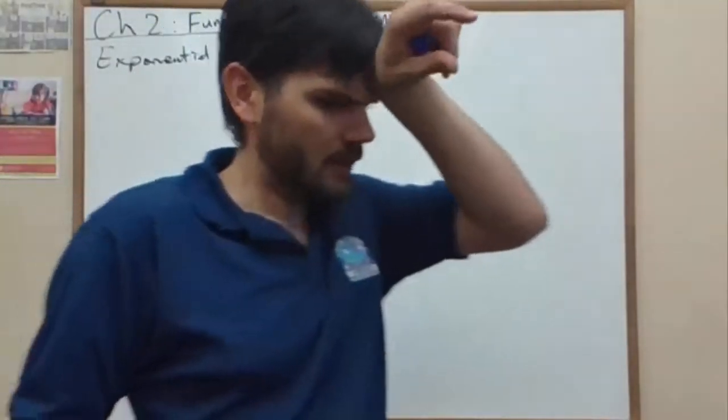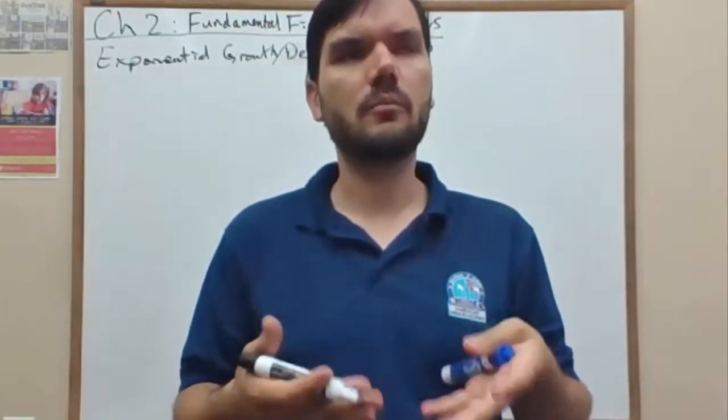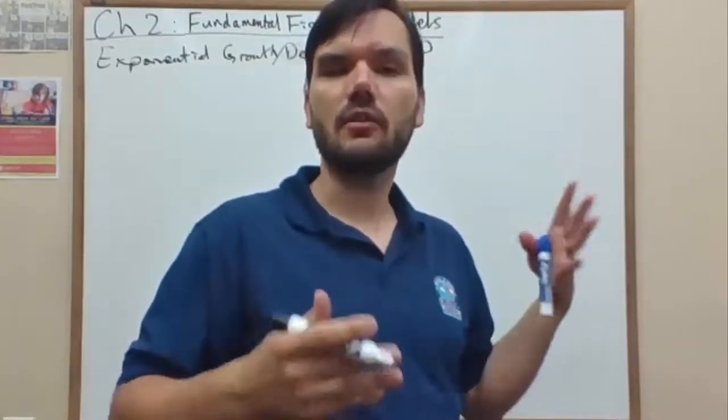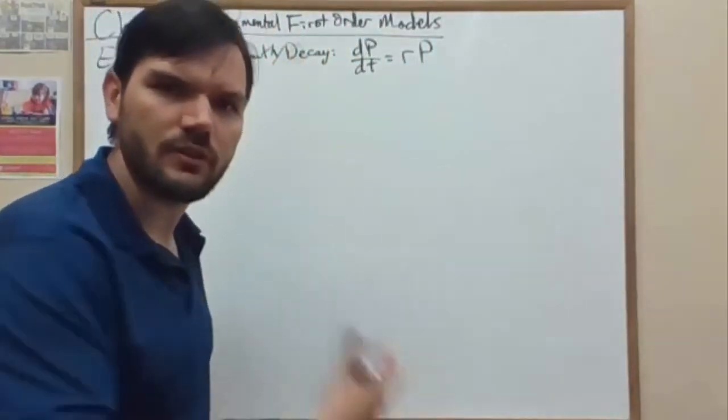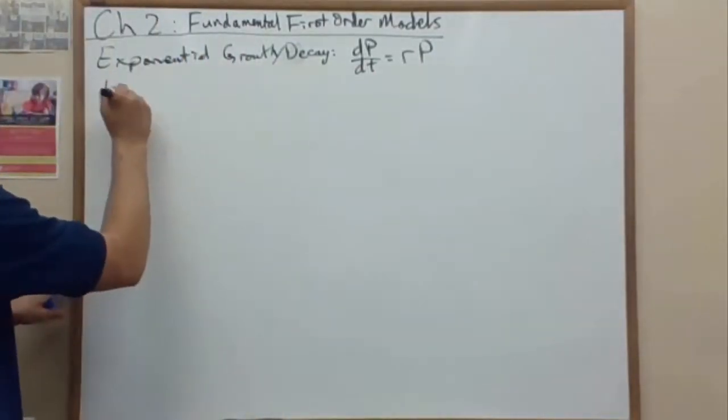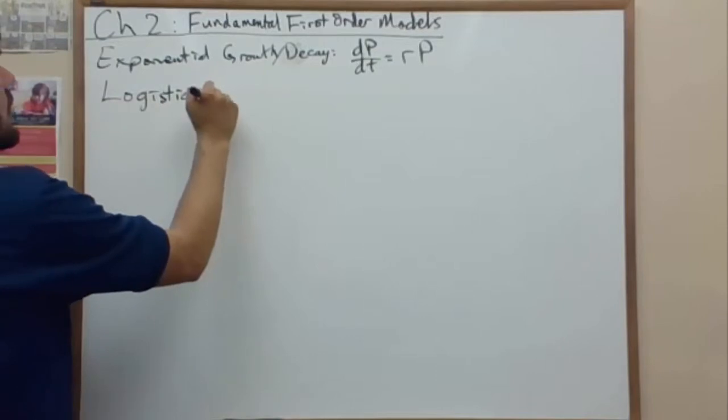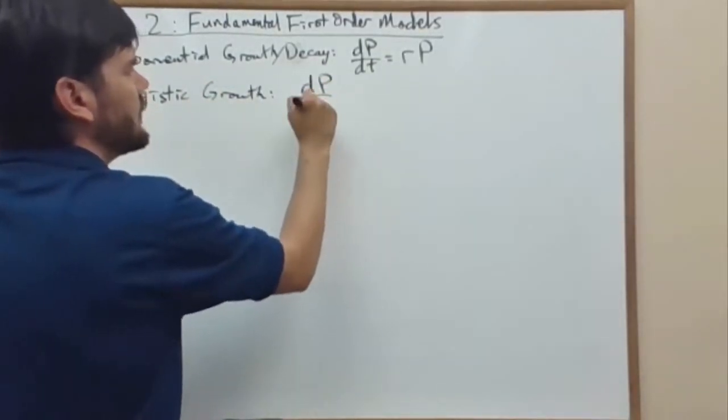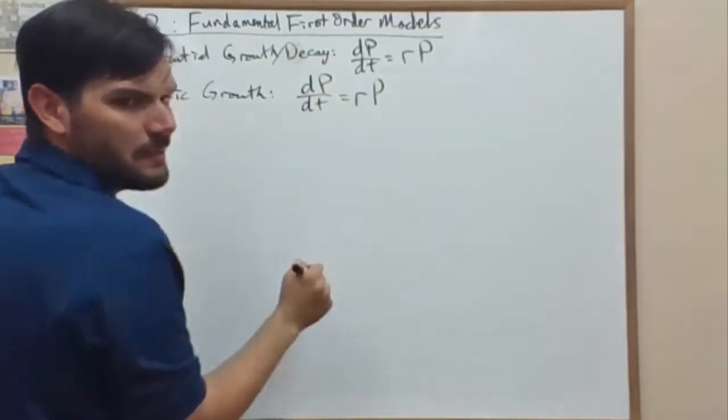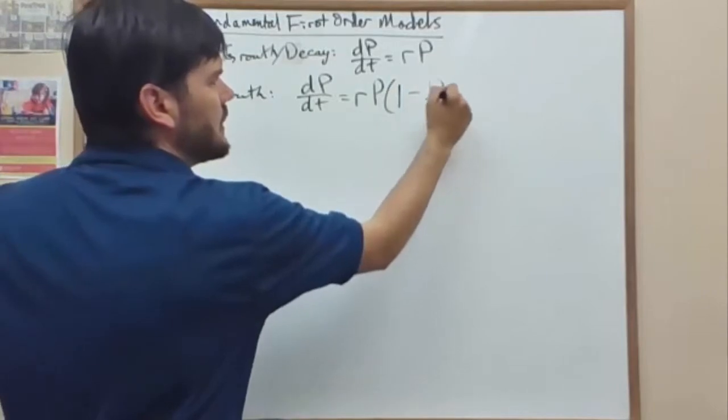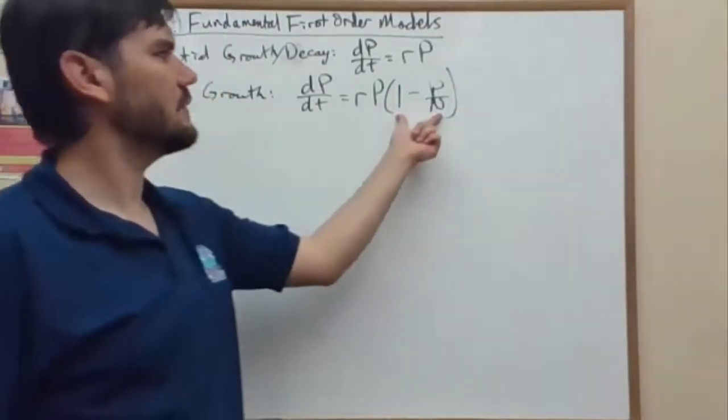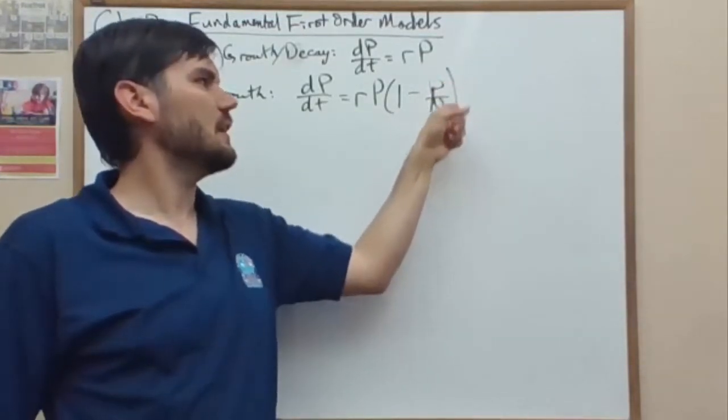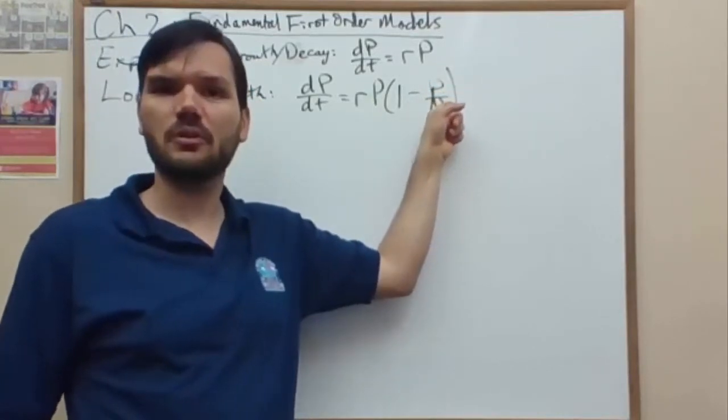So the next step on improving the exponential models to be more realistic for a general population is to add a restriction on that growth. We call this the logistic growth model where the derivative is equal to a multiple of the population times 1 minus p over n.